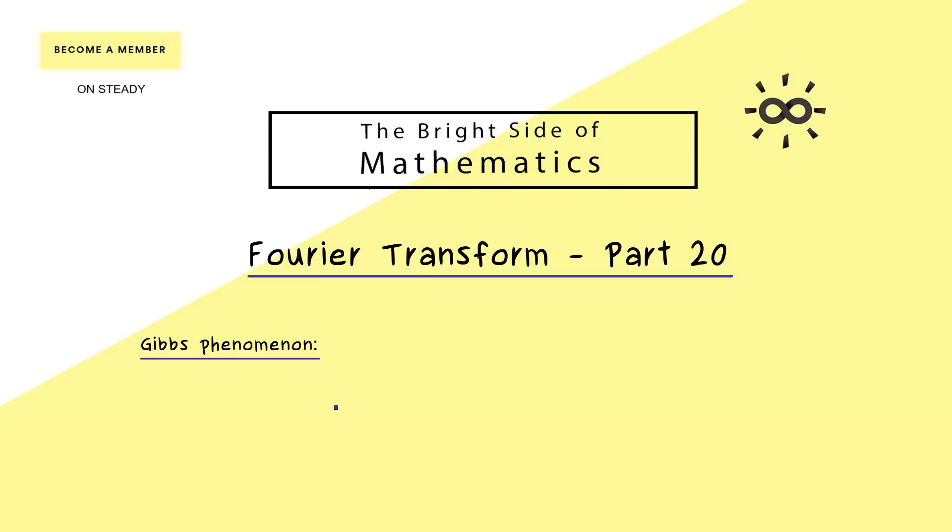So as already mentioned, this is something that only occurs at jump points, so we have to consider a non-continuous function. This function we have already seen in part 17 and we also already know that the Fourier series converges pointwise, except at the jump point. Because there we already know the Fourier series always converges to the point in the middle. And now as always we can just increase how many terms we consider in the Fourier series and we get a better and better approximation at every point, except at the jump point.